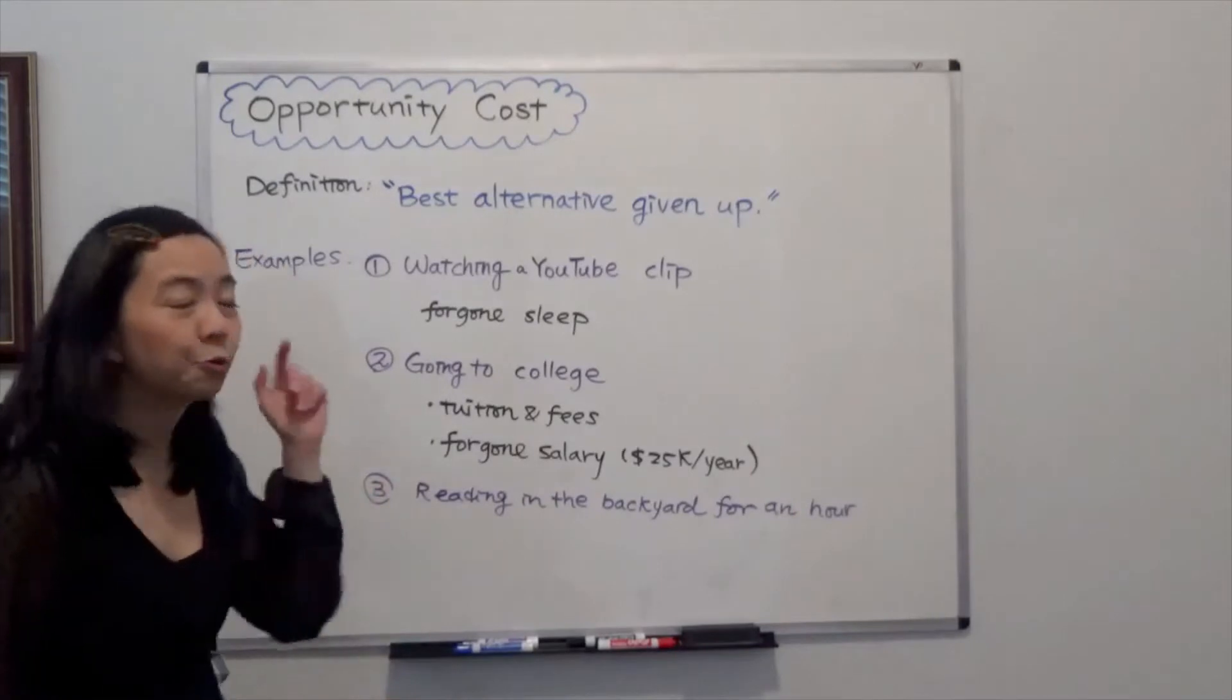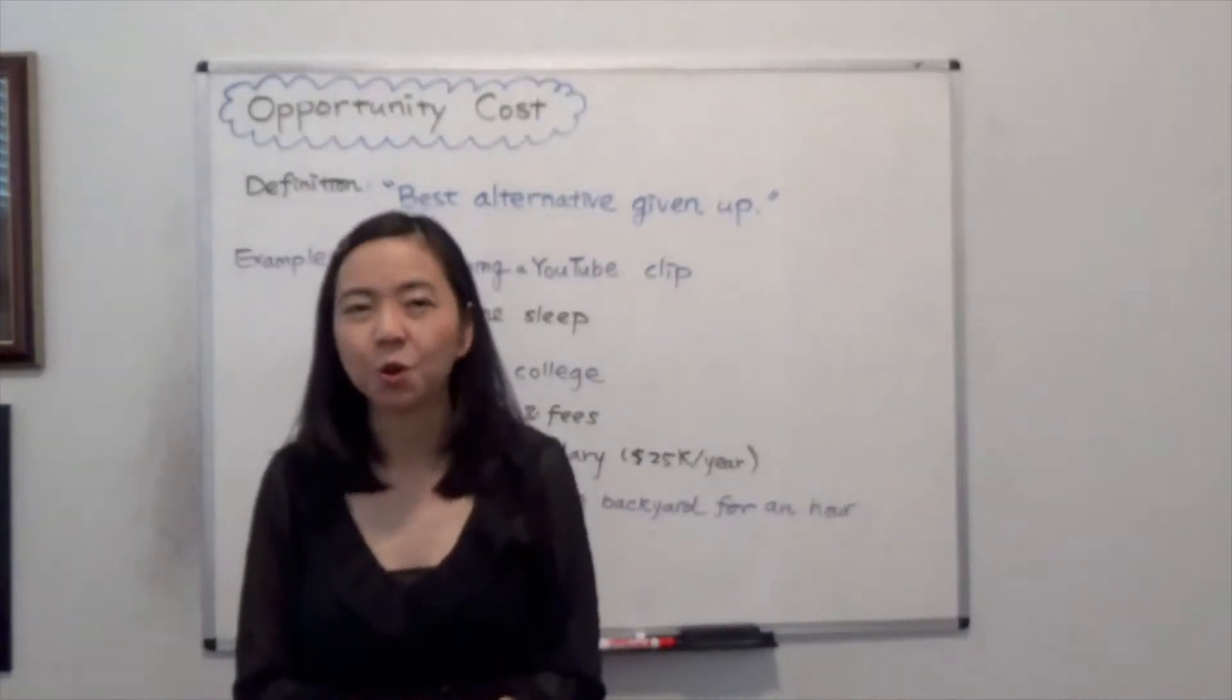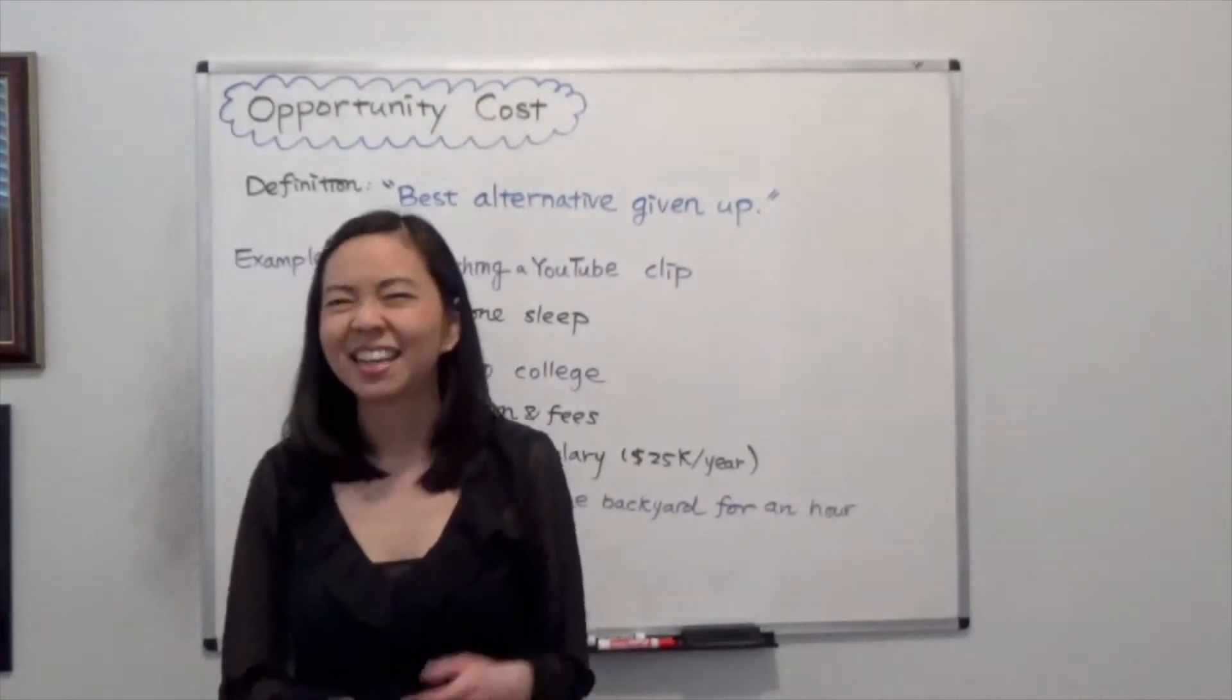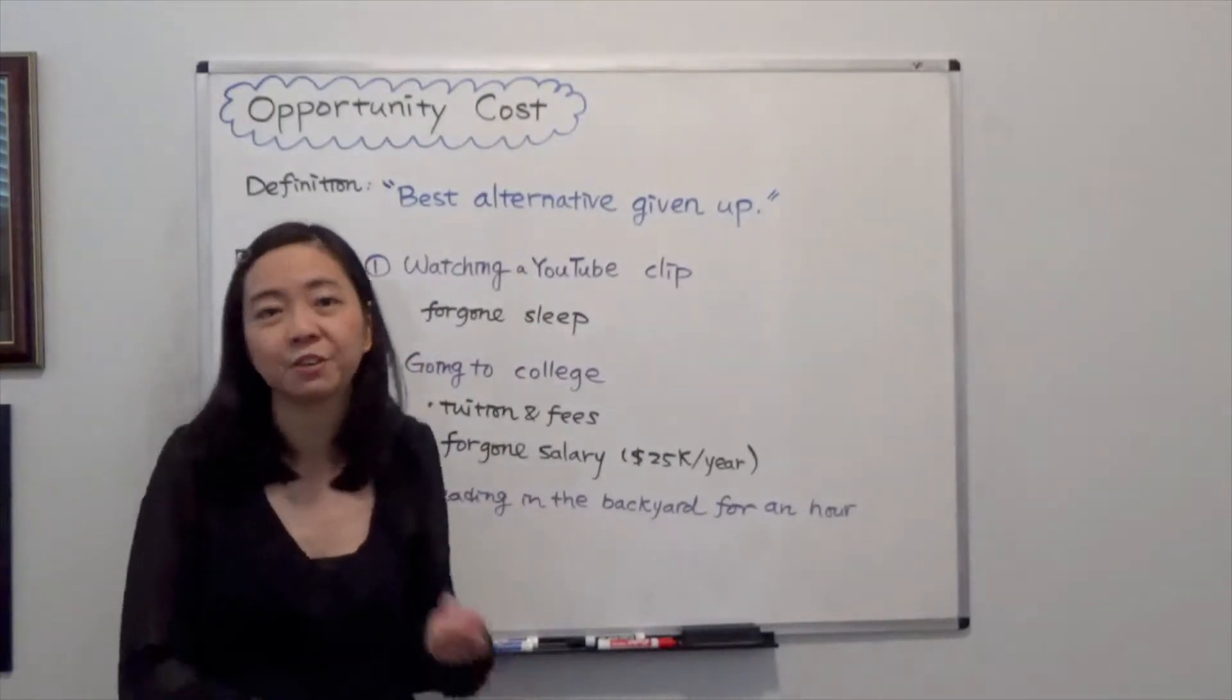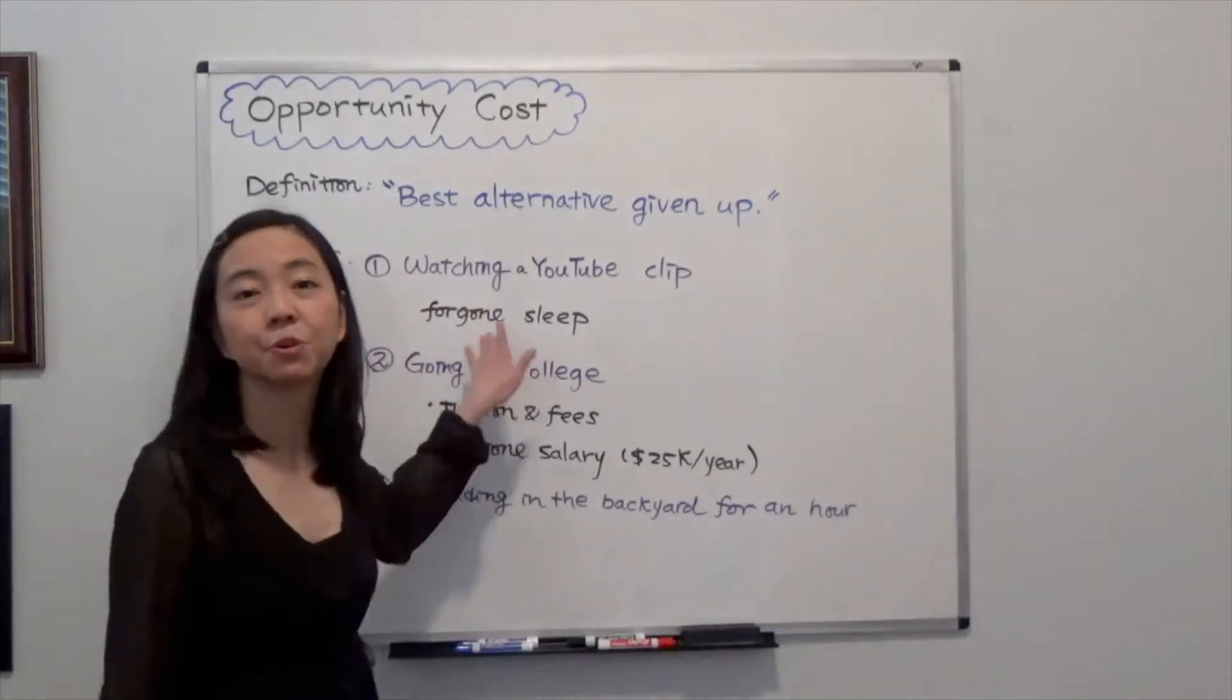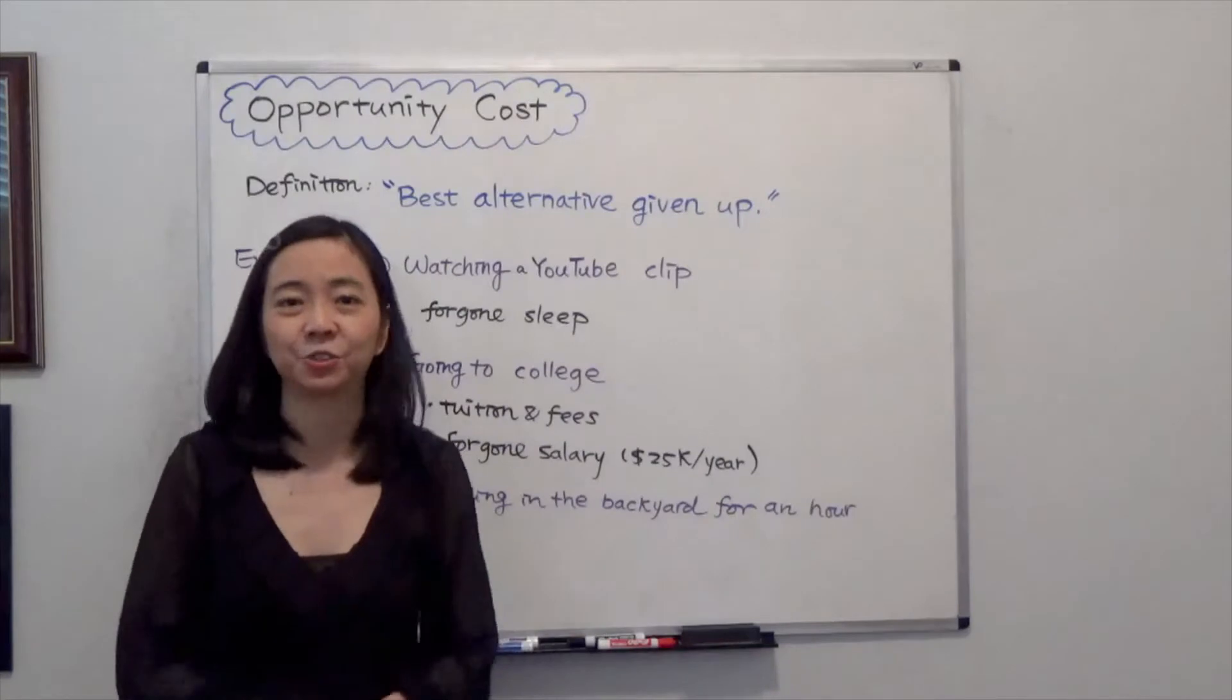So for example, right now you're watching this YouTube clip. Let me ask you, what would you do if you were not watching this YouTube clip? Let's say you say that I would like to take a nap if I were not watching your clip. Then the foregone sleep or foregone nap will be the opportunity cost of watching this YouTube clip.